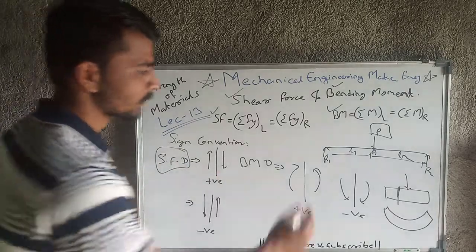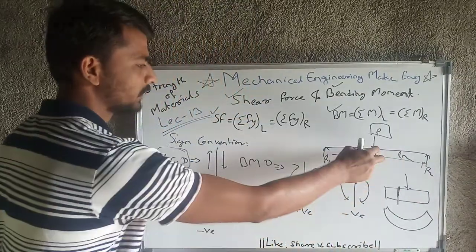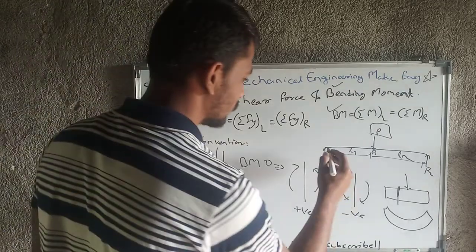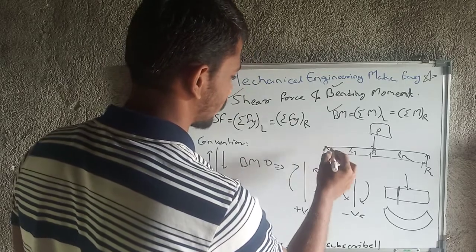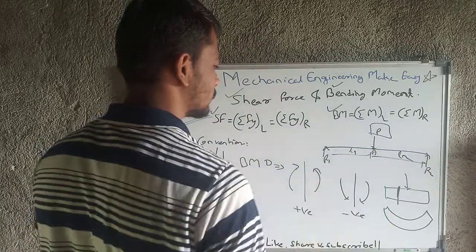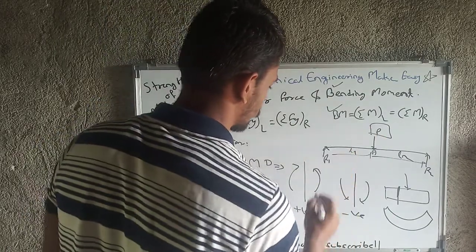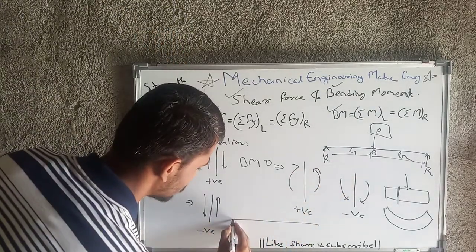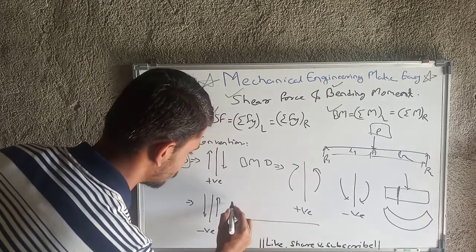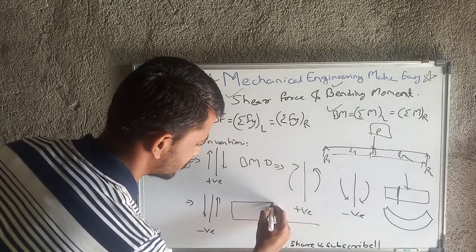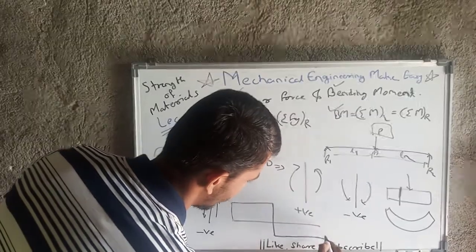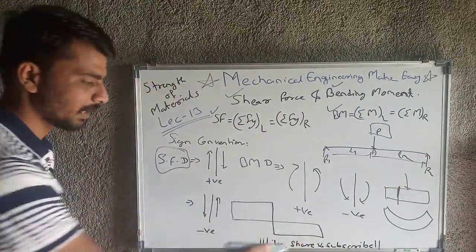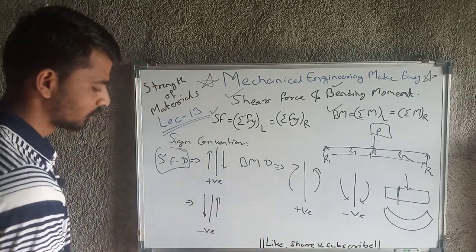To draw a shear force diagram, we calculate shear force at all points of loading. Where a load is present, the shear force increases or decreases; where there is no load, the shear force does not change. We calculate shear force at all key points and plot those values. For example, this is our beam — R1 causes a shear force of a certain magnitude; up to point A there is no change, but at the point where force is applied, it changes — that is the shear force diagram.